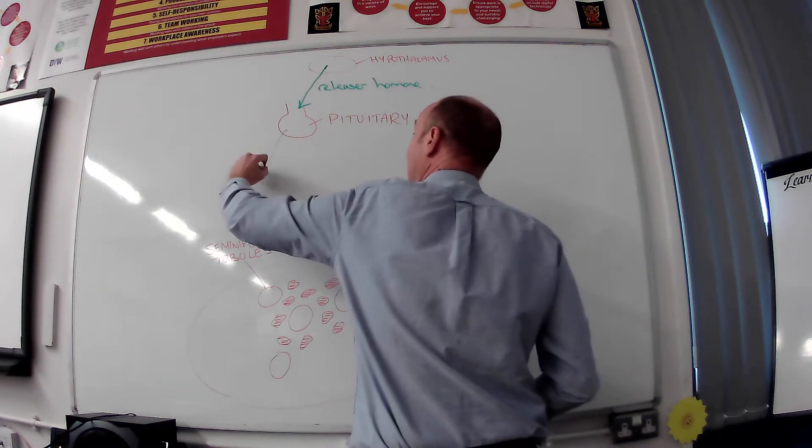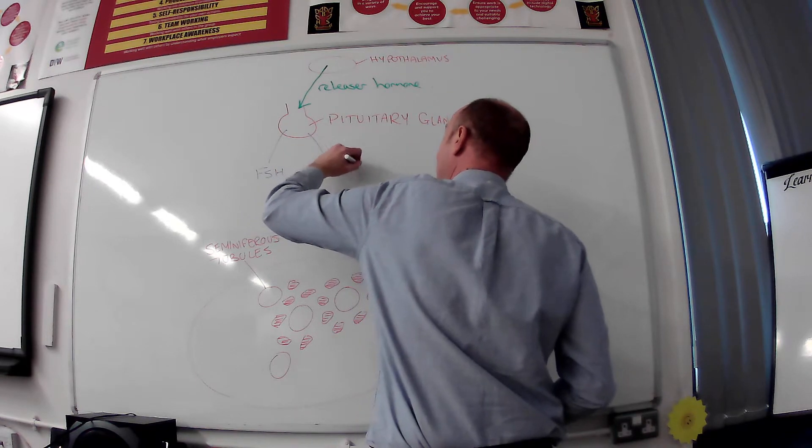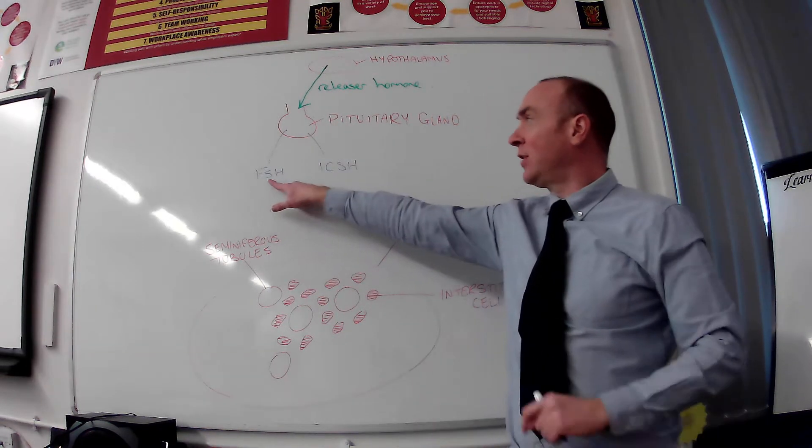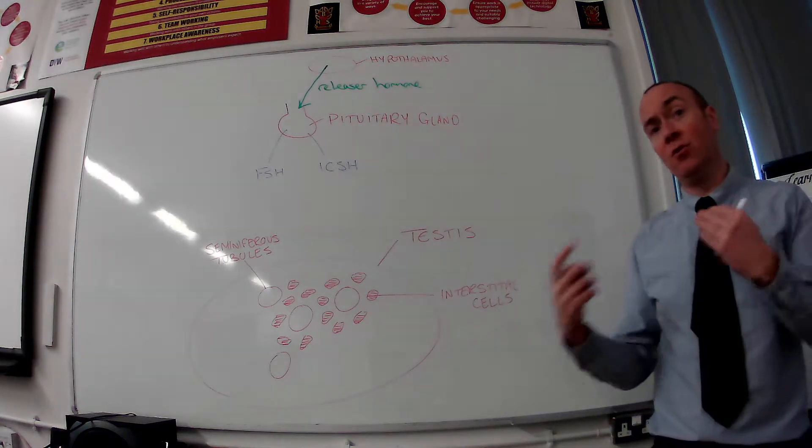And releaser hormone is the trigger for pituitary gland to release two of its own hormones. First one is called FSH and the other one is called ICSH. They stand for follicle stimulating hormone and interstitial cell stimulating hormone, neither of which you will need to know.